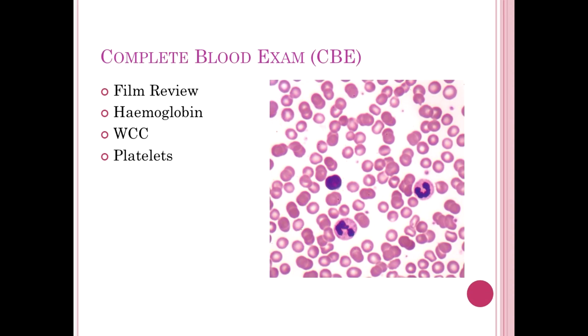What is actually part of this is a hemoglobin check and red cell indices, a white cell count and a differential of the white cells — where we look at the different white cells, their number and often their percentage — and then the platelet count. Often accompanying this is a film review, done automatically by the machine, and may be checked by a medical scientist or sent to a hematologist for review.